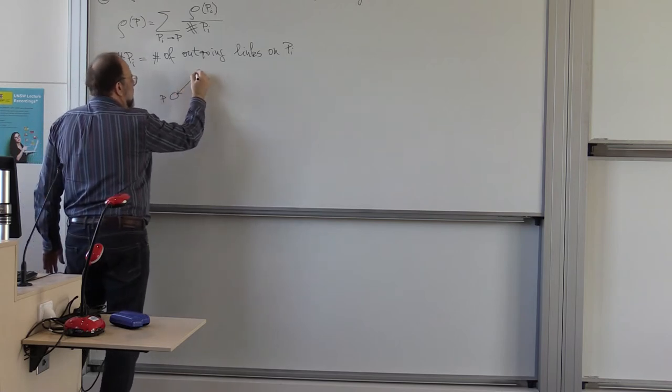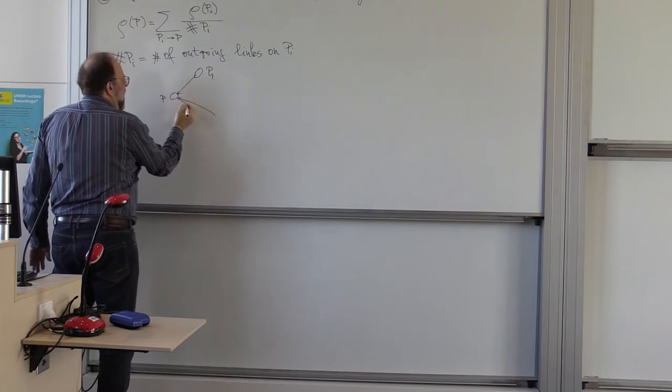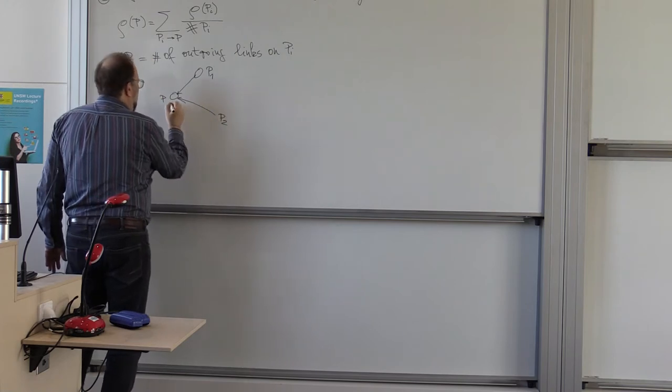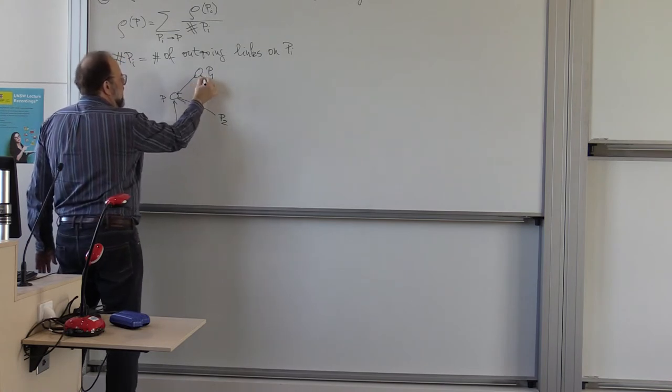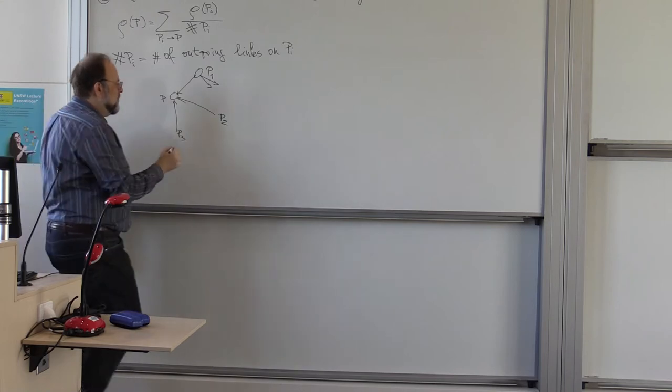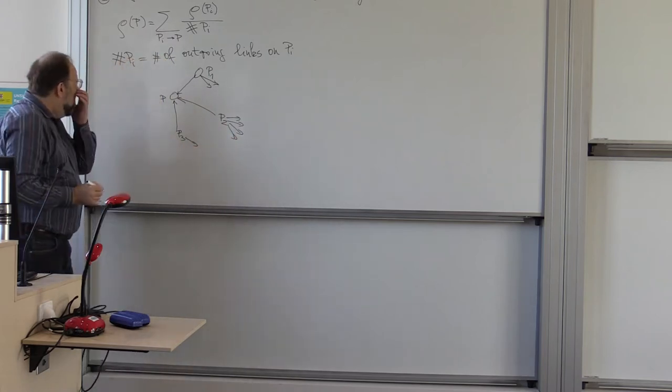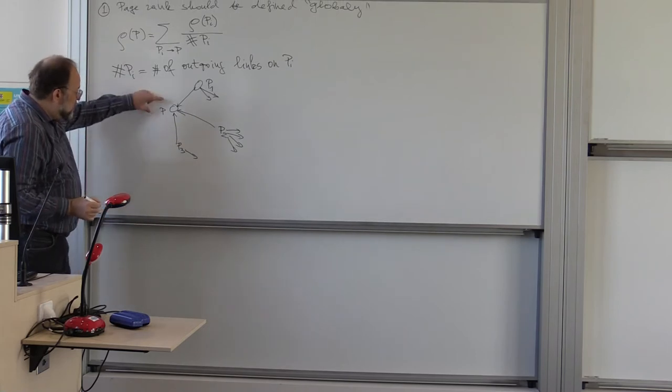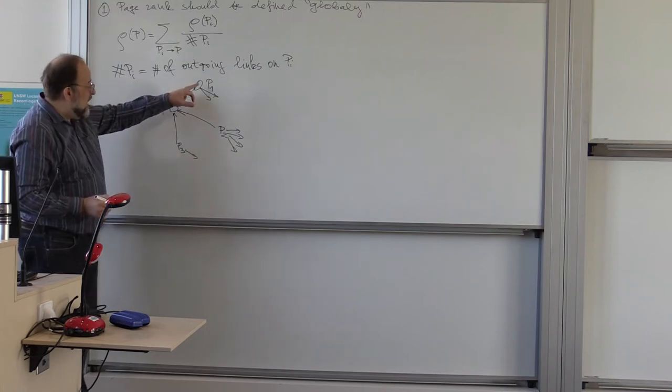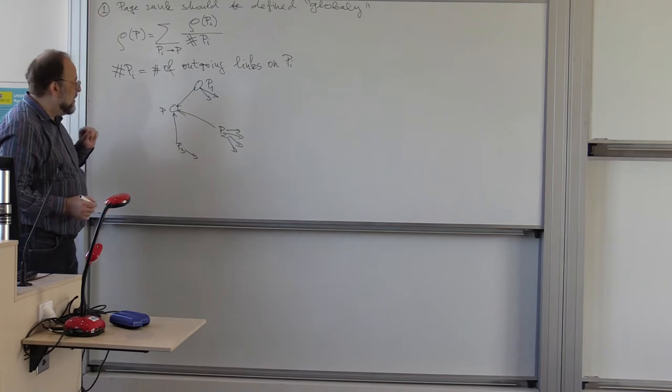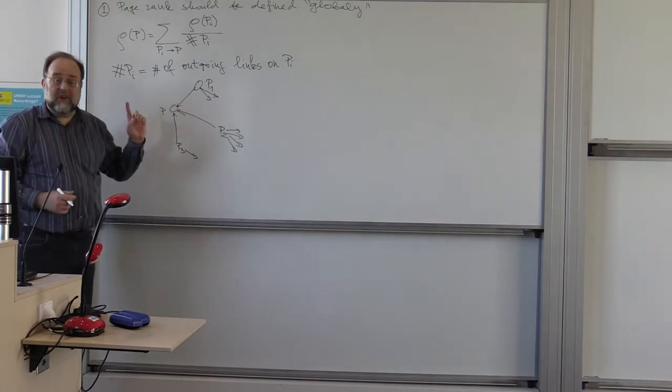So, geometrically, it is what this looks like. This is your web page P, and you have links on other web pages, say P-1, P-2, and say P-3. And, of course, P-1 might point to several other pages, and the same here. So, the page rank of this web page should be weighted average of the page ranks of pages that point to it prorated by the number of outgoing links.